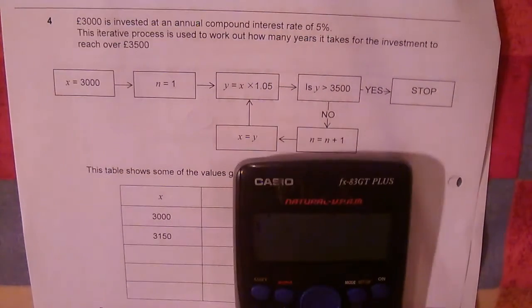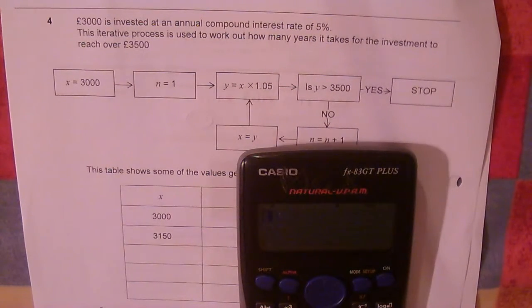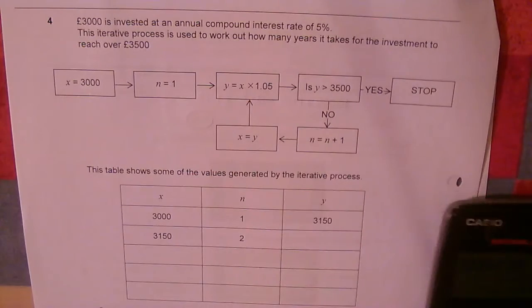Just check that on the calculator to make sure you've understood it properly. £3,000 times by 1.05 equals £3,150. So that confirms it.